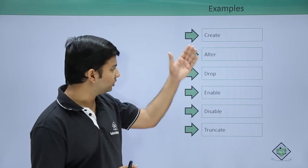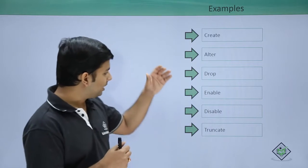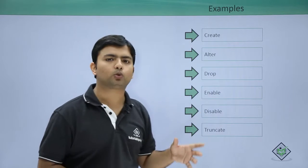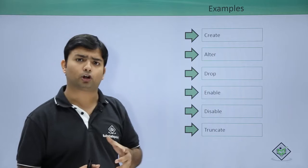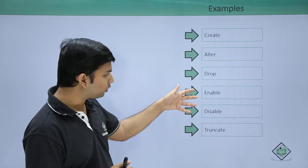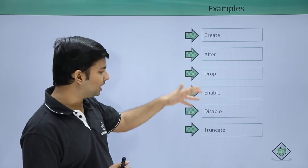Now ENABLE and DISABLE—these couple of commands will be used only for a specific database object called triggers, which we will cover later. But obviously, when you will enable or disable a particular trigger, it will be a DDL statement.